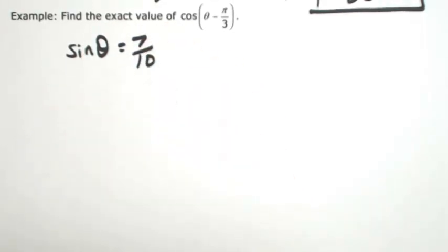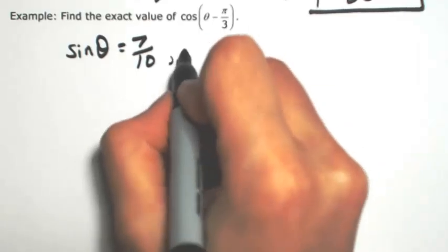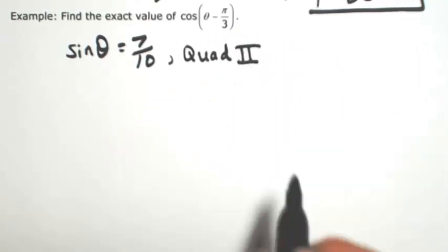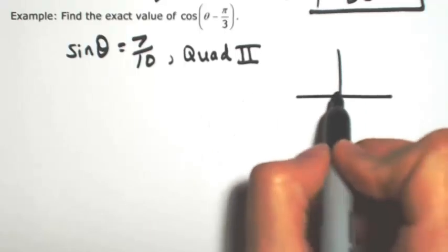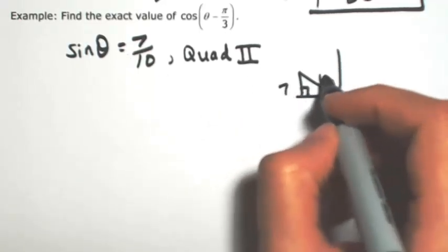So that could be in the first or the second quadrant. This is actually going to be in the second quadrant. So immediately I'm going to draw that triangle so I know what we're dealing with here. In the second quadrant, opposite is 7, hypotenuse is 10.